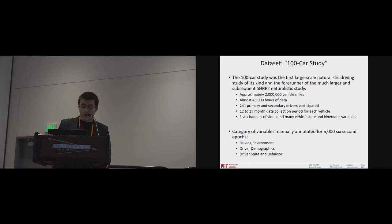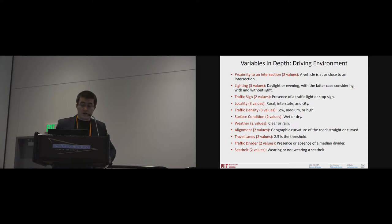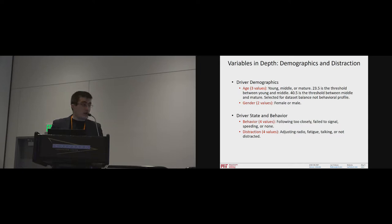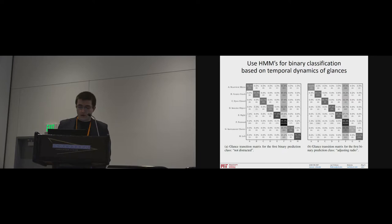The driving environment, driver demographics, and driver state and behavior. The driving environment variables are things like proximity to the intersection. Lighting. Is it daylight? Is it evening? Traffic signs. Locality. So rural, interstate, city. Traffic density. Surface condition. Dry or wet. Weather. The number of travel lanes or the presence of a traffic divider. Seatbelt. So all of these things were annotated on a frame by frame, 30 frames a second basis for those 5,000 epochs. Also, driver demographics. So age in three categories with 23 and a half and 40 and a half years old being the thresholds for young, middle-aged and older. And gender. Female, male. And then driver state. The obvious thing to get from the face is behavior, like following too closely, failed to signal, and so on. And distraction. Adjusting the radio. Fatigue. Talking. And so on.